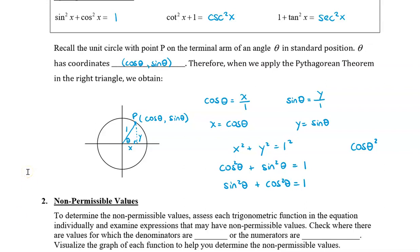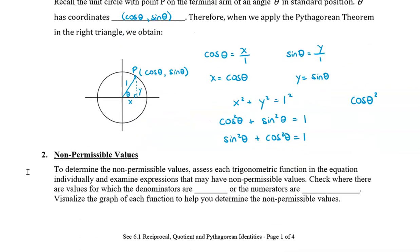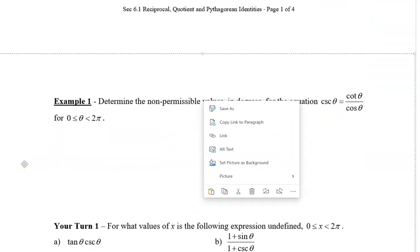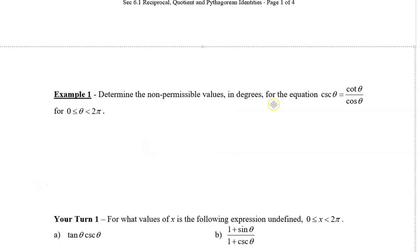Now let's take a look at how to find non-permissible values. To determine them, you assess each trig function in the equation individually and examine expressions that may have non-permissible values. You want to check where denominators are 0 or numerators are undefined. It helps to visualize the graph of each function. For example: determine the non-permissible values in degrees and radians for the equation cosecant theta equals cotangent theta divided by cosine theta.